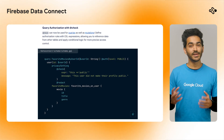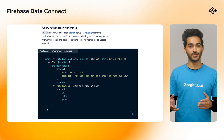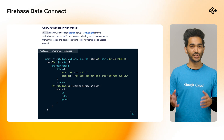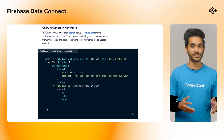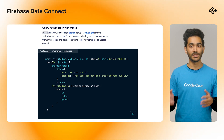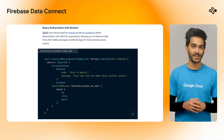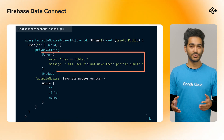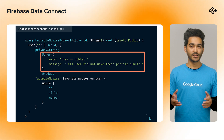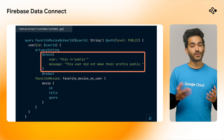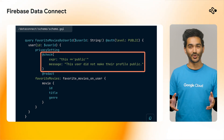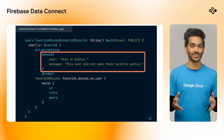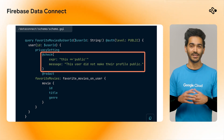Now over to the second update. Data Connect has introduced a new @check directive for defining authorization rules with cell expressions. This allows you to restrict queries based on roles or other conditions. Learn more in the Data Connect documentation linked below.